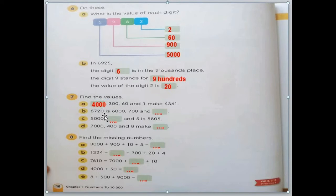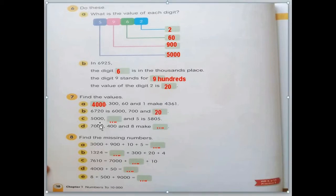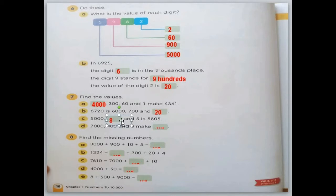Next: 5,000 and something and 5 is 5,805. We have 5,000 here and 5 here — the number missing is 8. Check: 8 is in the place value of hundreds, so 8 is followed by two zeros — the value is 800.